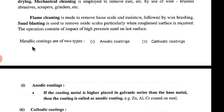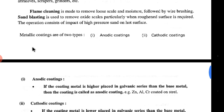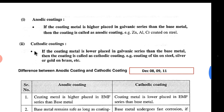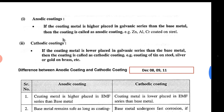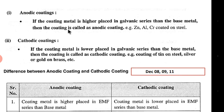There are two types of metallic coatings which are mostly used: anodic coating and cathodic coating. For anodic coating, the name itself indicates the concept — if the coating metal is placed higher in the galvanic series than the base metal, then the coating is called an anodic coating. The base metal is lower placed and the coating metal is higher placed. Examples include zinc, aluminum, and chromium coated on steel.